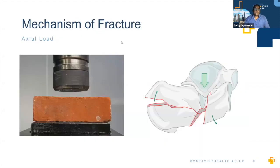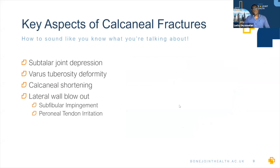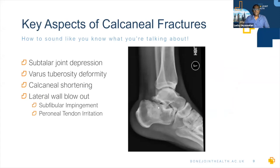Calcaneal fractures come about in a way someone once described as squashing a brick: the bottom hand is the floor, the top hand is the talus — squeeze, squeeze, squeeze and it blows out. The side walls all blow out. The talus drives into the sinus tarsi region at Gissane's angle, and you get multiple fracture lines going in multiple directions. The first key finding to describe is subtalar joint depression: the talus is driven in, you've completely lost your posterior facet — it's all punched in — and you can see the curved articular surface density impacted down.